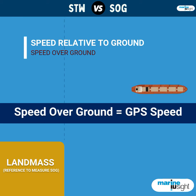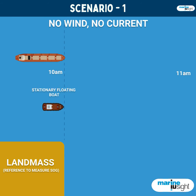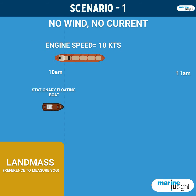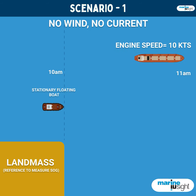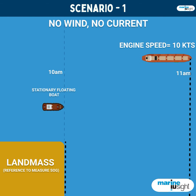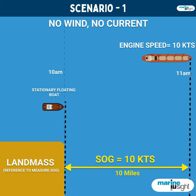Let's take a few examples. Let us assume there is no wind and current and a ship moving at a speed of 10 knots. After one hour, she would have travelled a distance of 10 miles with respect to land, thereby making speed over ground as 10 knots. With respect to the floating boat, she would have also travelled a distance of 10 miles, thereby making speed through water as 10 knots.